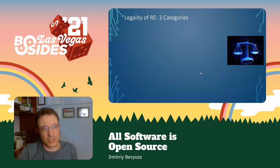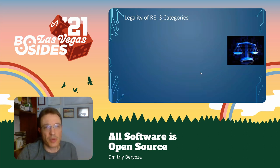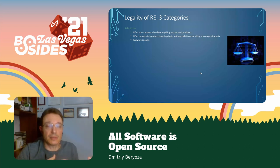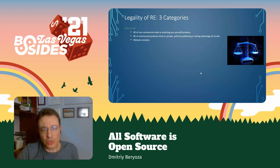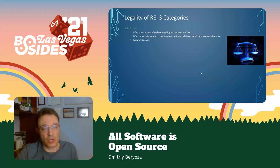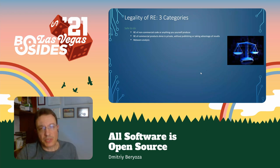For my own work, I use a rough split of reverse engineering activities into three categories. Things I believe are safe: anything you produce yourself — you're free to reverse engineer your own programs. Also non-commercial software is fair game. If you're looking at commercial products but do that in private, do not share your findings, you're doing it just for learning — I think that's a pretty safe activity. And of course, malware analysis.